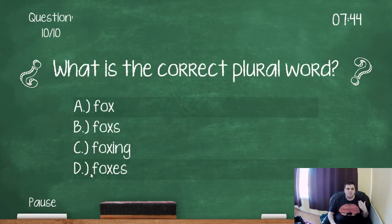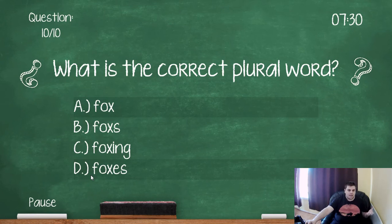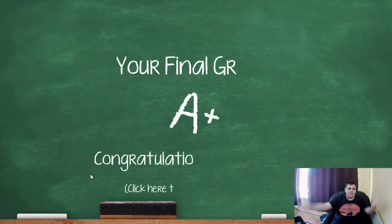What is the correct plural word? So we have fox, foxes, foxes, foxes, foxing of foxes. So it is D. We add the ES plural to that. Or the suffix, ES suffix I should say, to that.